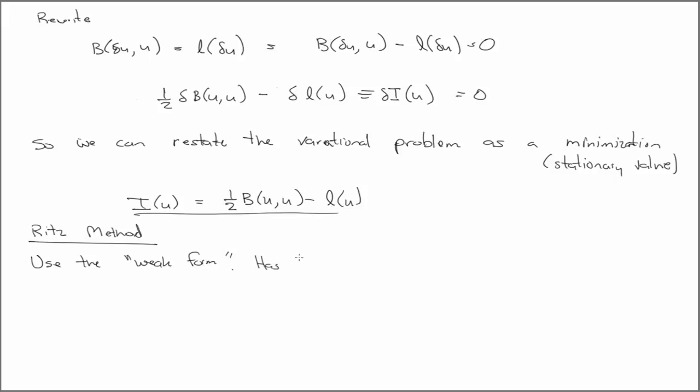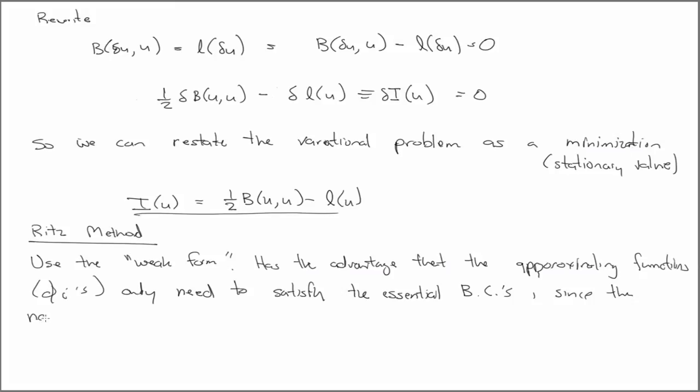The Ritz method has the advantage that the approximating functions, that is the phi i's, only need to satisfy the essential boundary conditions, since the natural boundary conditions are included in the weak form.